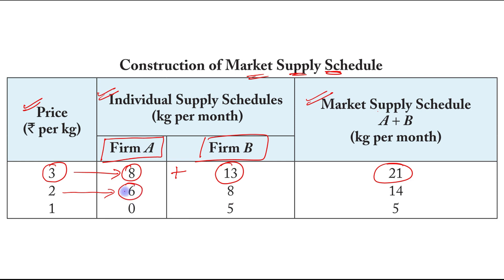At a price of rupees 2, Firm A is willing to produce 6 kg per month and Firm B is willing to produce 8 kg per month. The market supply is 6 plus 8, which equals 14 kg per month.